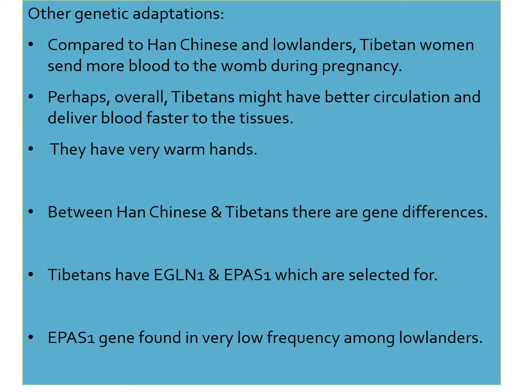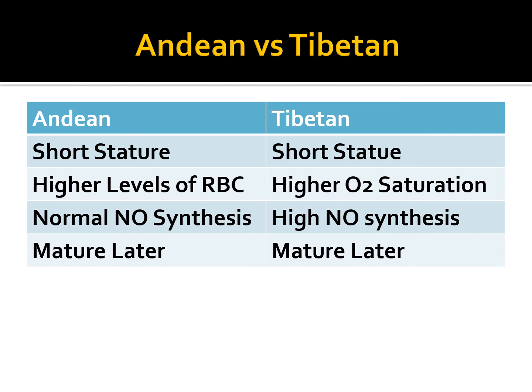Tibetan women send more blood to the womb during pregnancy, and Tibetans overall may have better circulation and deliver blood faster to tissues — evidenced by their very warm hands regardless of environment. Between Han Chinese and Tibetans there are gene differences: Tibetans have the EGLN1 and EPAS1 genes which are selected for, and the EPAS1 gene is found in very low frequency among lowlanders. Comparing the two high altitude populations: Andeans and Tibetans are both short in stature; Andeans have adapted with higher red blood cell levels while Tibetans have adapted with higher O2 saturation.